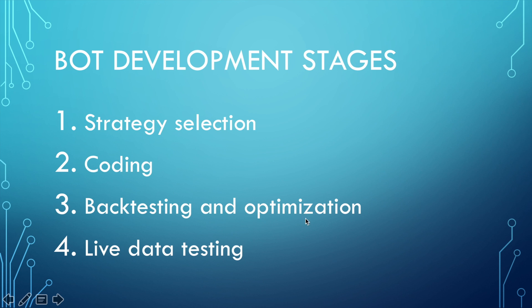The third stage is backtesting and optimization. Actually, it is the second most important part. Every strategy must be tested before moving the bot into production mode. For this purpose, we will prepare different datasets of market data and use them to analyze our strategy's performance. A strategy may have multiple parameters that can be optimized during the backtesting process. I will not use sophisticated algorithmic optimizers and will change these parameters manually.